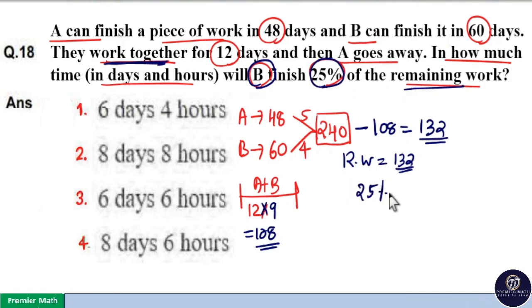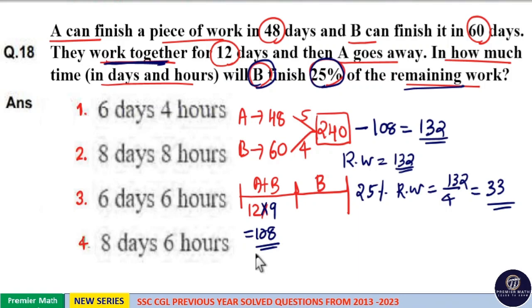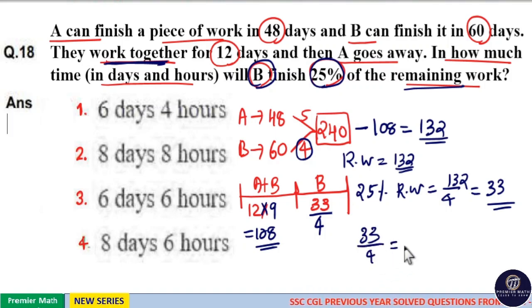So 25% of remaining work is equal to 1 by 4 of 132 which is equal to 33 units of work. So we have to find in how much time B alone will finish 25% of work, that is 33 units of work. Here B can finish 4 units of work in a day. So 33 units will be finished by B in 33 by 4 days, which is equal to 4 goes 8 times in 32 remaining 1 by 4. So 1 by 4 days means 6 hours, 8 days and 6 hours.